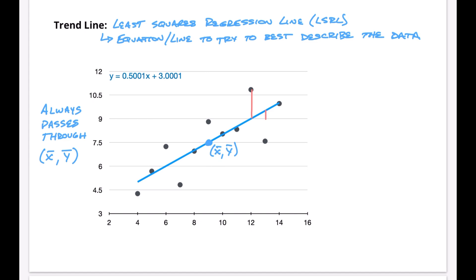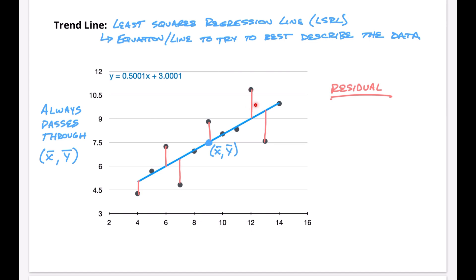Every single black point is observed data. These are all predicted values on the line. The difference between an observed and predicted value is called a residual. Residuals are not in our curriculum, but if you are doing an IA containing statistics, you almost certainly should be including residuals. I'll have a video that discusses residuals at a little bit more depth — not at a college level, but at the depth you might need for a high school course.